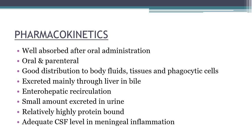Rifampin is well absorbed after oral administration and both oral and parenteral preparations are available. It is widely distributed to body fluids, tissues, and phagocytic cells, and kills organisms inaccessible to other drugs — such as intracellular mycobacteria or those in lung abscesses. It is excreted mainly through the liver and bile with enterohepatic recirculation. No dose adjustment is required in renal or hepatic insufficiency. Adequate CSF levels are reached in meningeal inflammation.